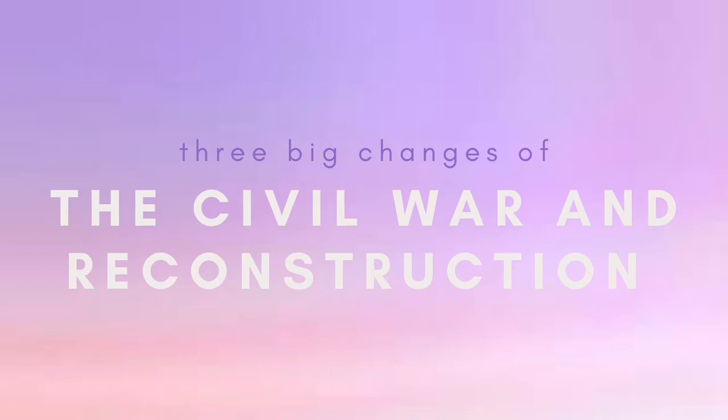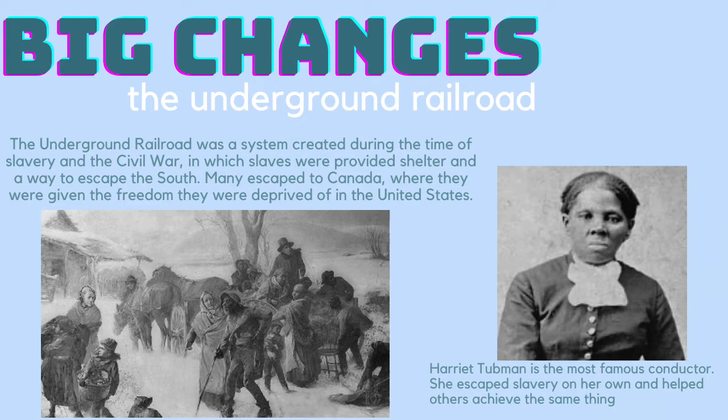First, African Americans' lives were changed. The Civil War and Reconstruction brought big change to the lives of African Americans. With the 15th Amendment being ratified, African Americans now had the right to vote, and Congress recognized their suffrage by passing this new law. Second, the Underground Railroad was completed — a system created during the time of slavery in which slaves were provided shelter and a way to escape the South. Many escaped to Canada, where they were given the freedom they were deprived of in the United States. The most famous conductor of the Underground Railroad is Harriet Tubman, who performed several escapes from slavery on her own and continued to guide other slaves to freedom.